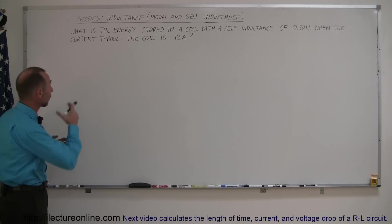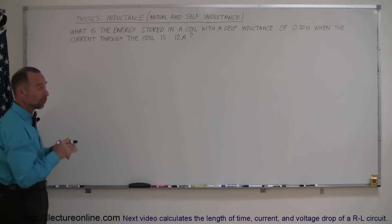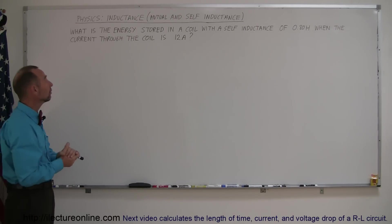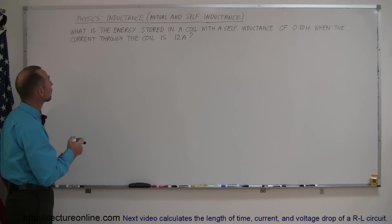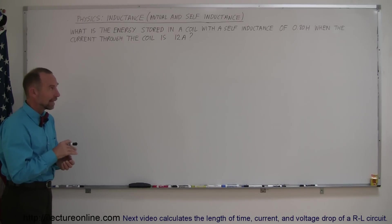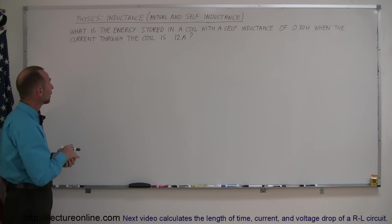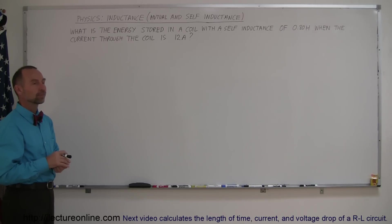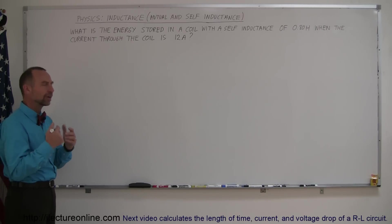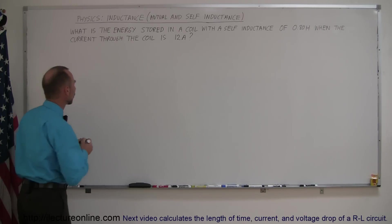The problem here reads — and we'll go ahead and use a problem as an example of how to do this — what is the energy stored in a coil with a self-inductance of 0.8 henrys when the current through the coil is 12 amps? So let's draw a coil and find out how this works.